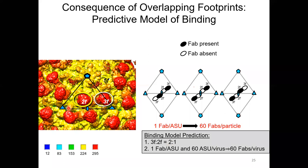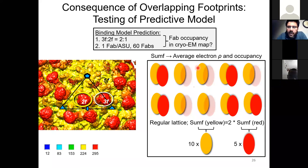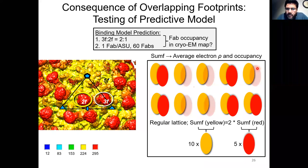We decided to test this model by determining the occupancy of FAB on the viral surface. To illustrate how occupancies work: imagine a dimer of two proteins where one monomer is yellow and the other is red, arranged in a regular lattice of ten copies. If the yellow monomer is present at every position and the red monomer is present at only five of the ten positions, then on average the occupancy of the yellow monomer will be two times the occupancy of the red monomer.